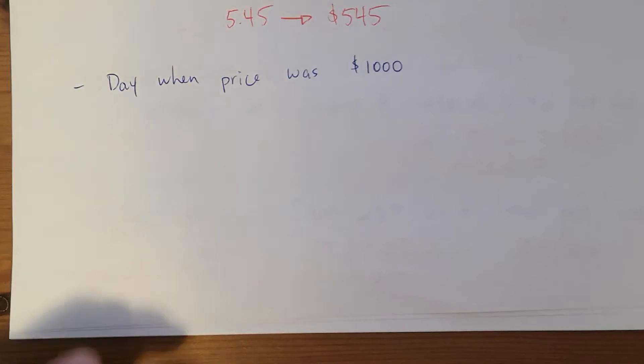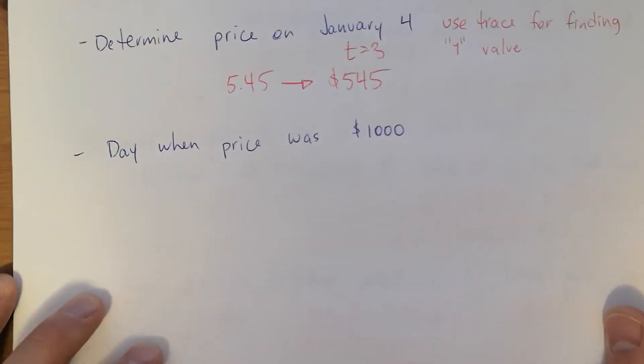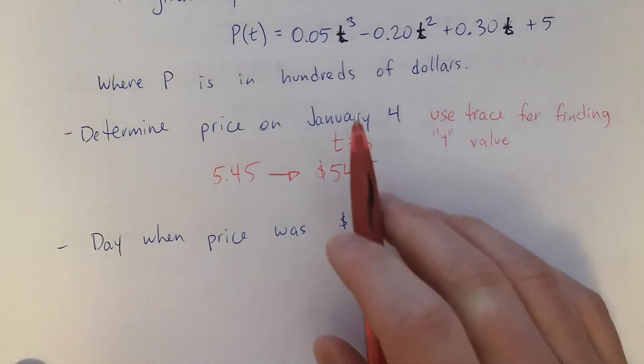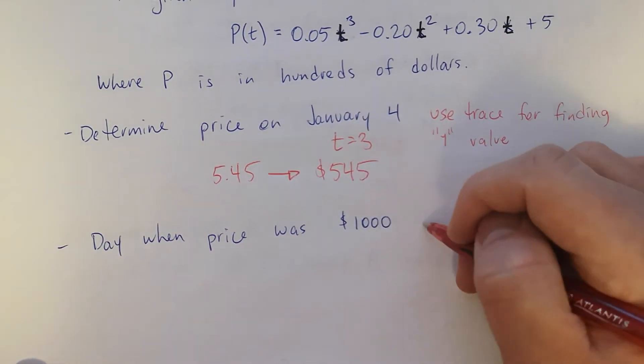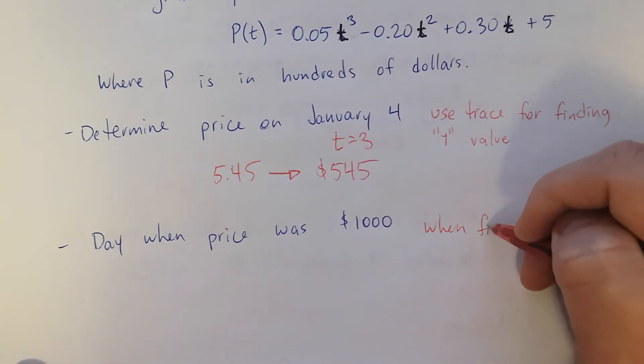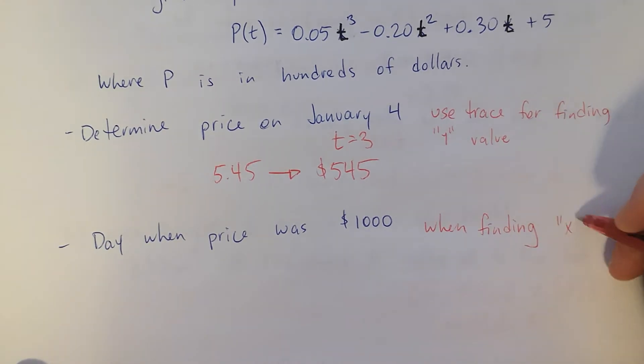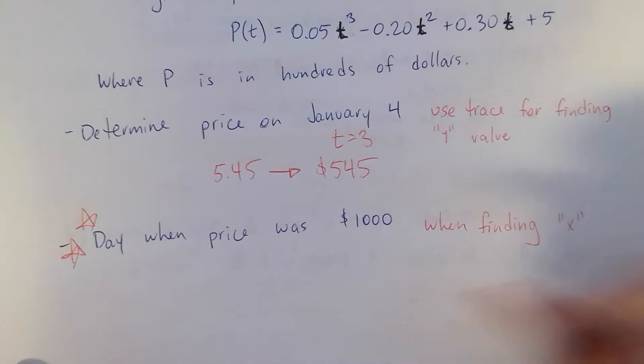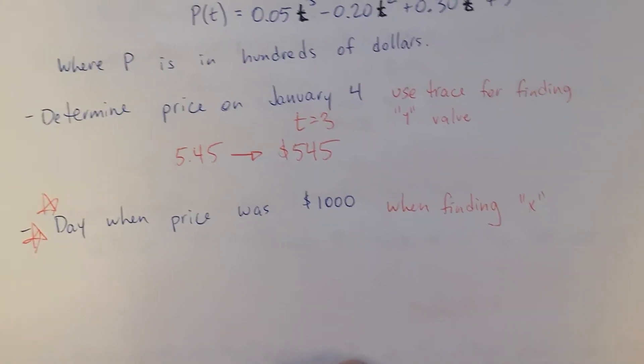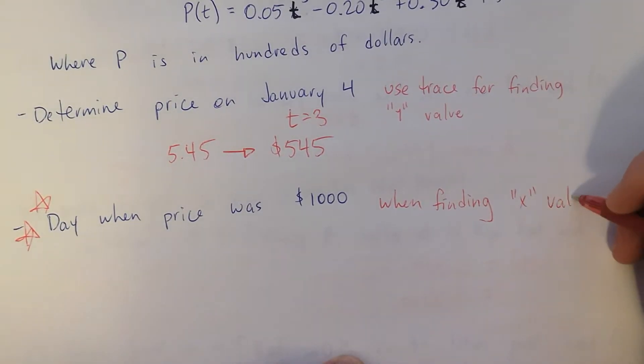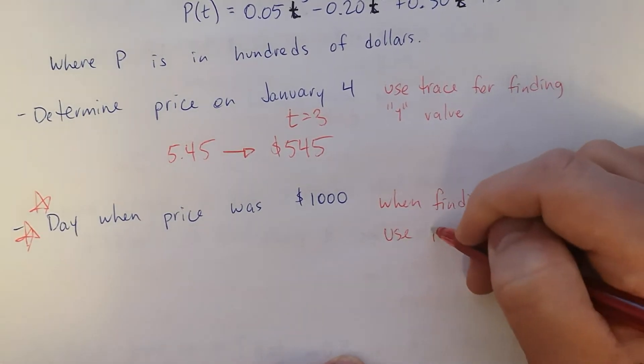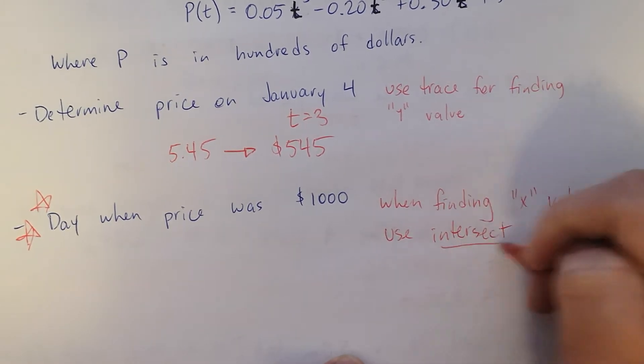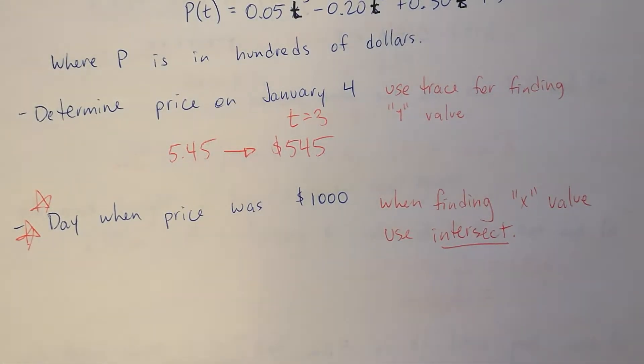Let's find the day when the price hit a thousand bucks. Okay, so we're finding an X value. This is going to be something that you use a lot. I'm going to put stars around this. So check out this example and make sure you can do it. So when finding an X value, you use something called an intersect. I'm going to show you exactly how to do it. And we're going to do lots of questions involving intersects.